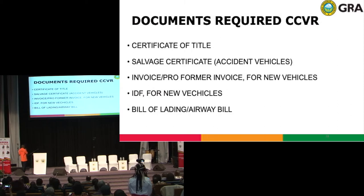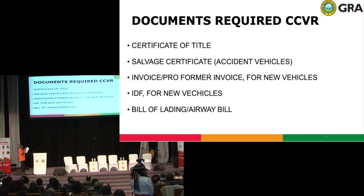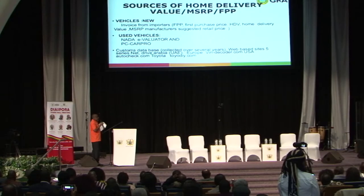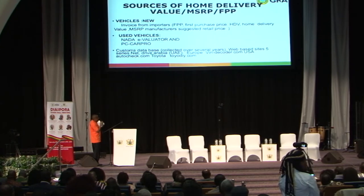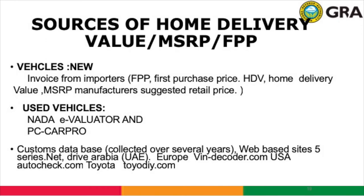The documents required for vehicle importation include a certificate of title, a salvage certificate if it's an accident vehicle, an invoice or pro-forma invoice for new vehicles, an IDF for new vehicles, and your bill of lading as the shipping document. In determining the value of a vehicle, we use guidelines from specific sources. For used vehicles, we use the NADA — the National Automobile Dealers Association — and an e-evaluator. There is also the PC Car Pro for European vehicles; you go online and find the suggested retail price, which is then applied.